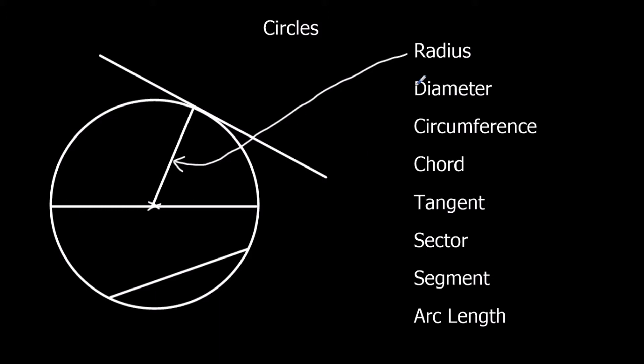Now a diameter is double a radius. It's the whole way through a circle through the center. So any line that goes from the side to the other side through the center is called a diameter.